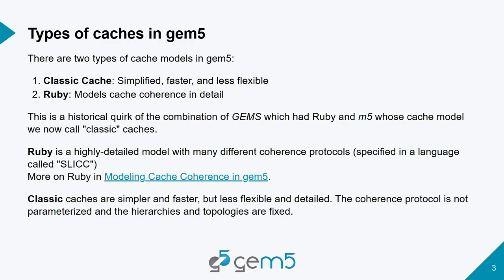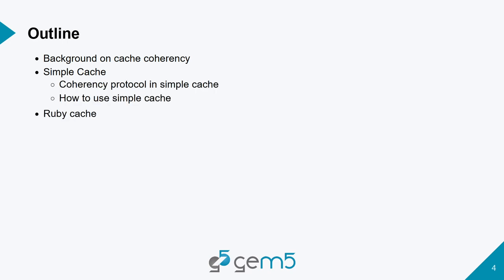In Ruby, the coherence protocol specifies the hierarchy but doesn't specify the topology, whereas in classic caches the topology is kind of fixed but the hierarchy is parameterized. We'll look at a little bit of background on cache coherence, then do a coding example of a cache hierarchy, and then talk briefly about Ruby.